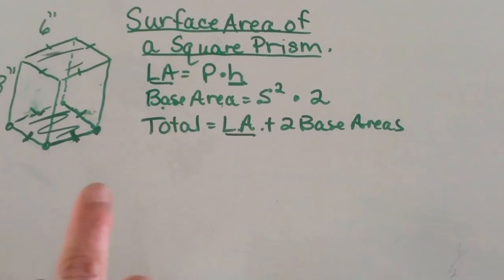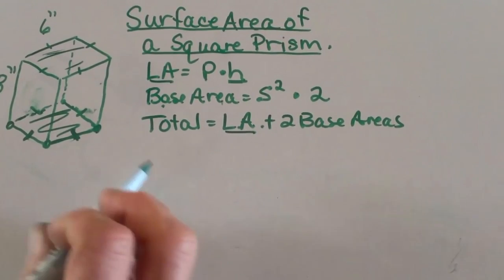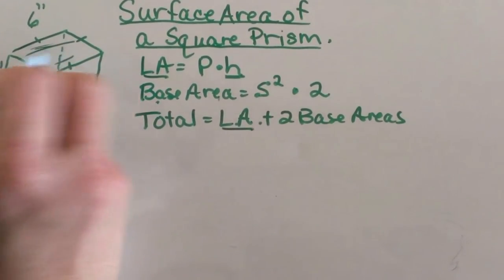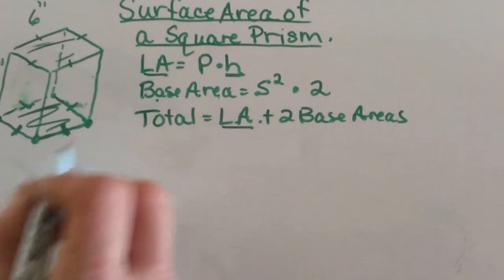We're looking at how to find the surface area of a square prism. So let's define a square prism. A prism is a figure that has two parallel bases and our bases are squares.